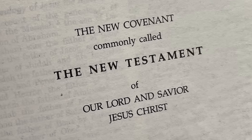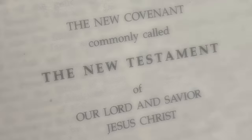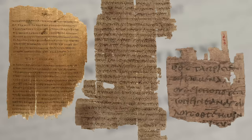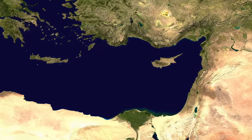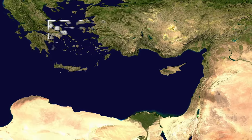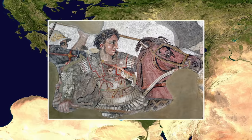To help us answer this question, I've enlisted the help of Dr. Benjamin Suchard, a historical linguist with a specialization in biblical Hebrew. Let's start with the source material, the New Testament. The books of the New Testament were composed in Koine Greek, which was widely spoken in the Eastern Mediterranean world in the centuries after Alexander the Great.